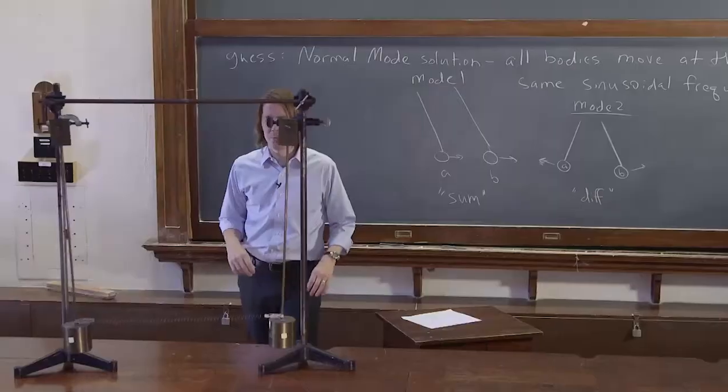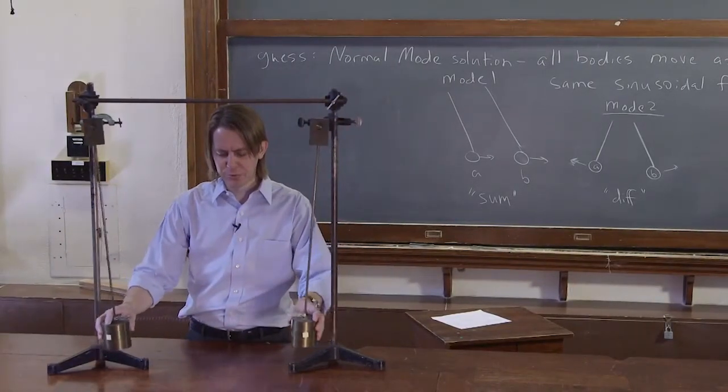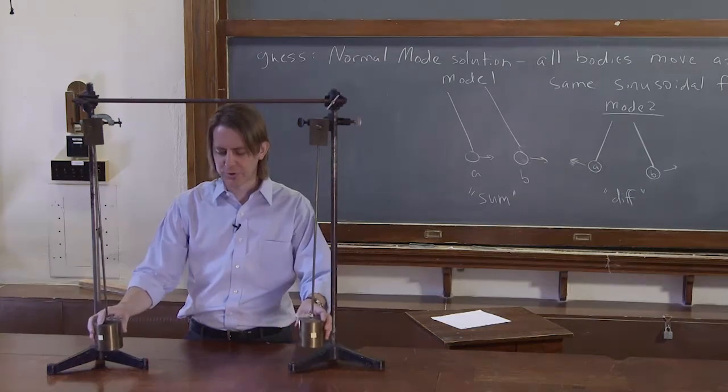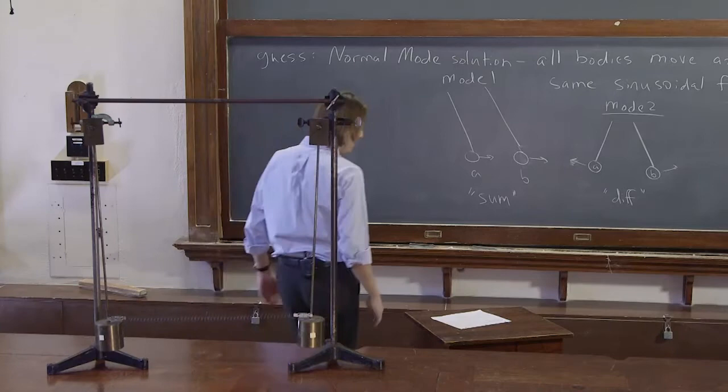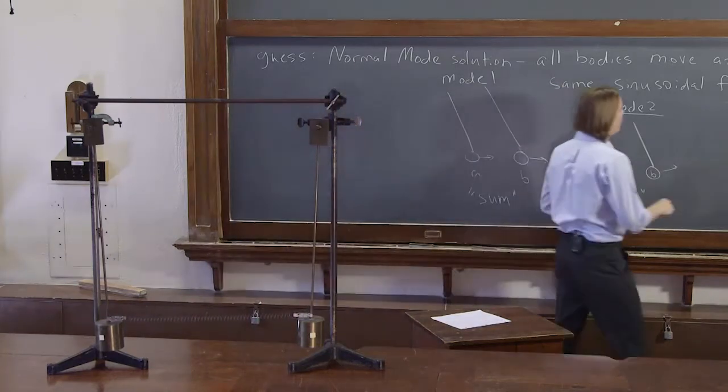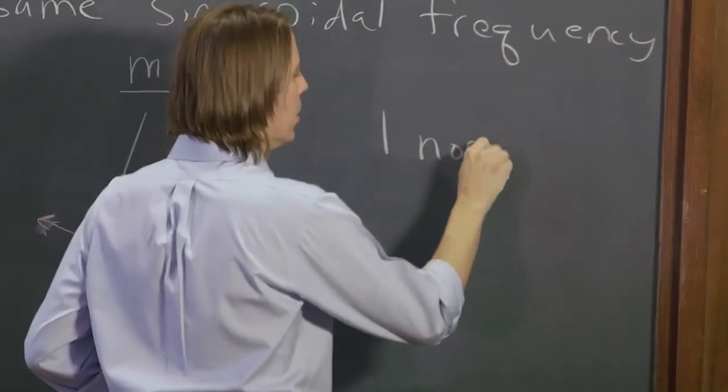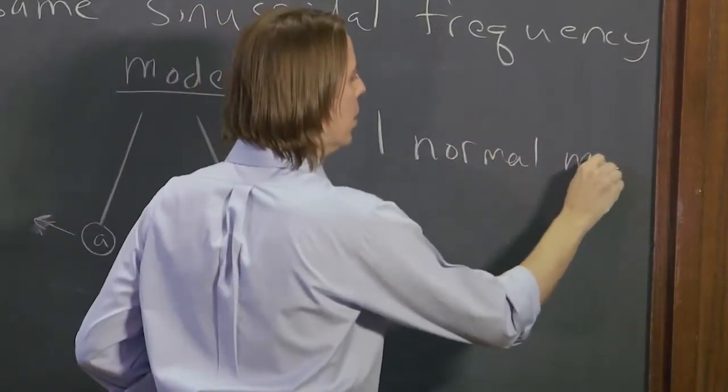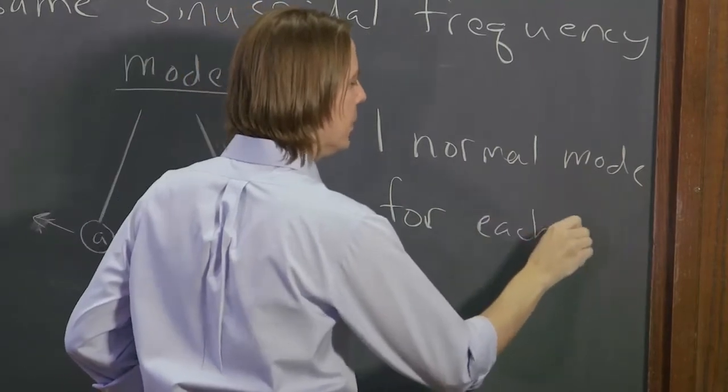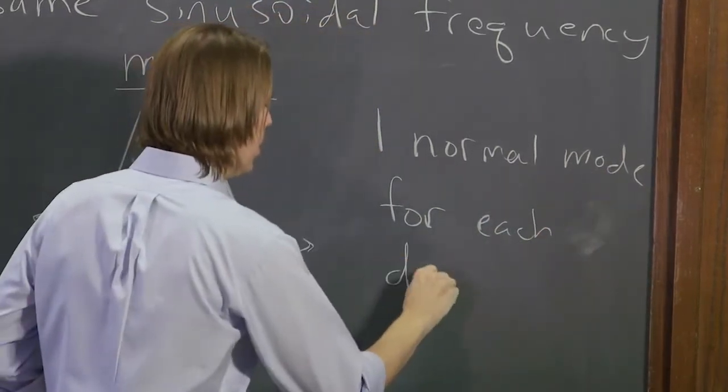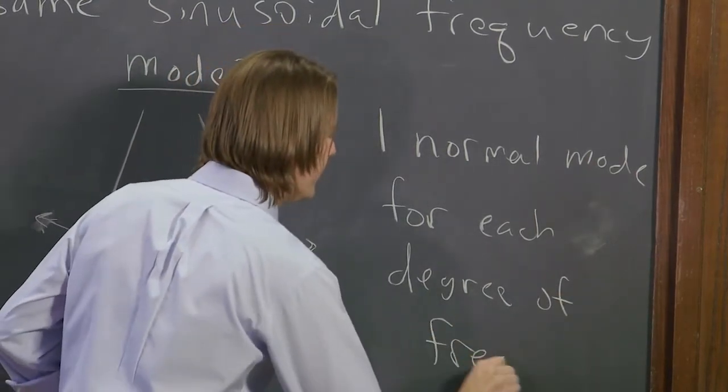What's the third normal mode of this system? How else could I move it to come up with a third? Oh, that's right. There is no third. There are only two. There are only two normal modes because you get one normal mode for each degree of freedom of the system.